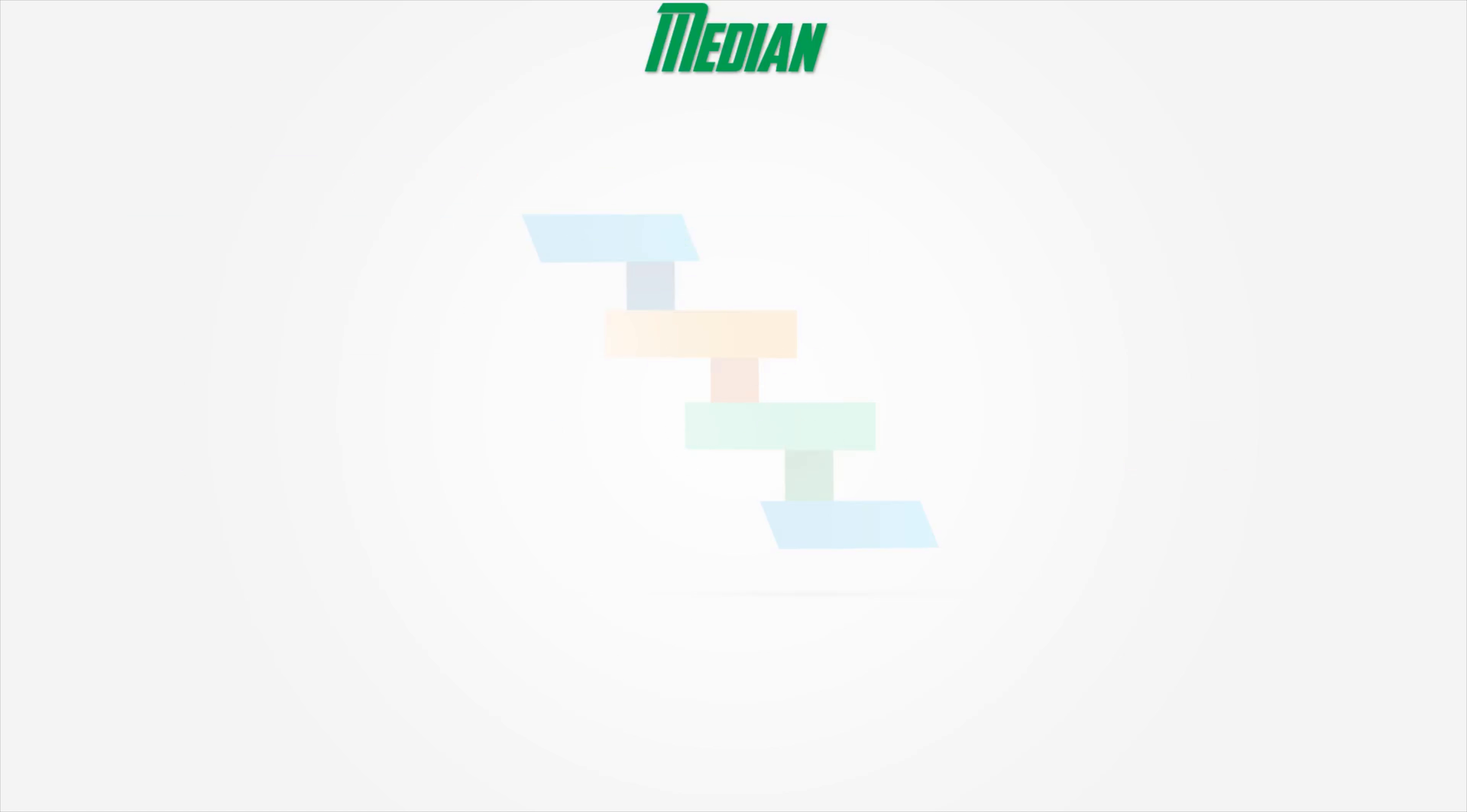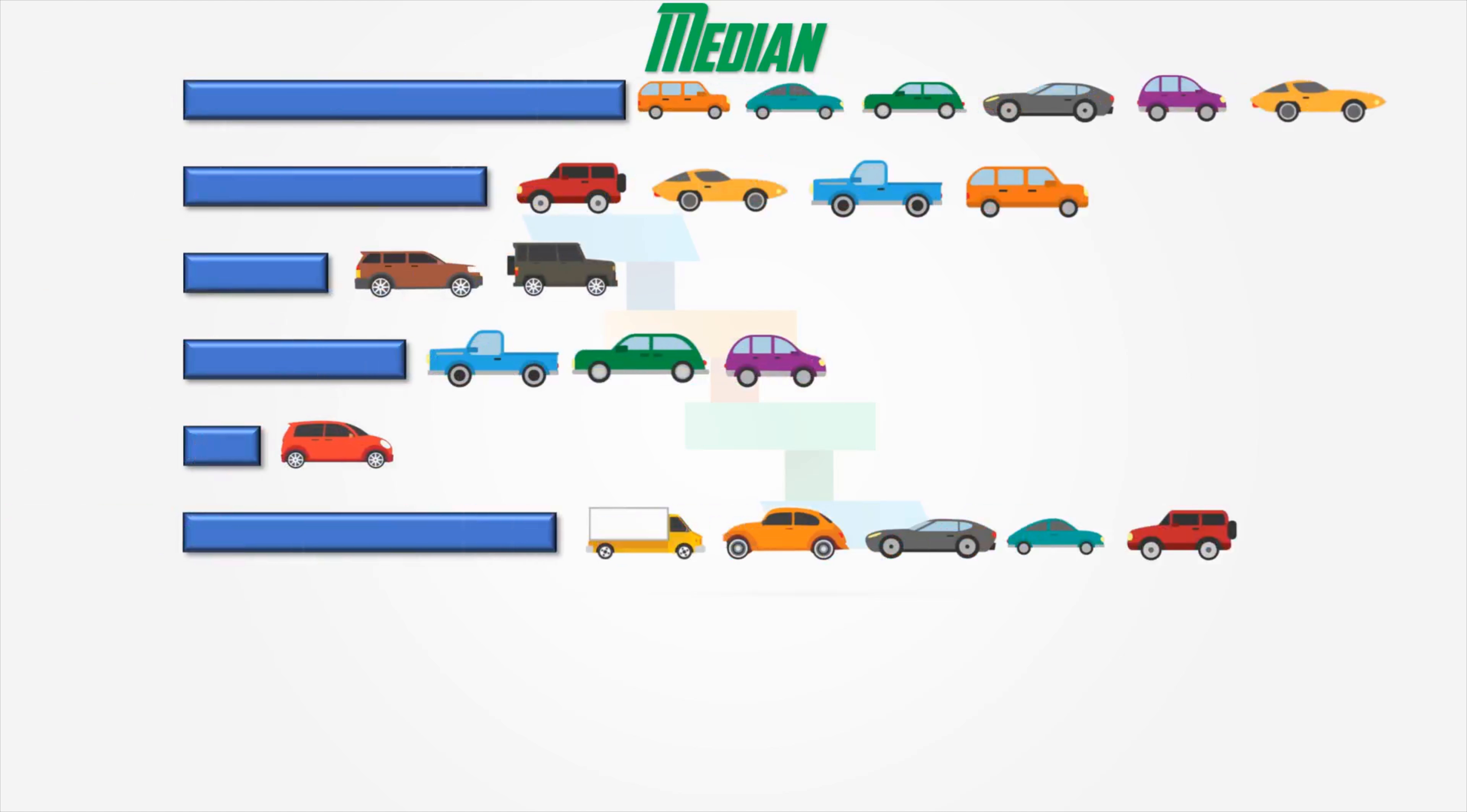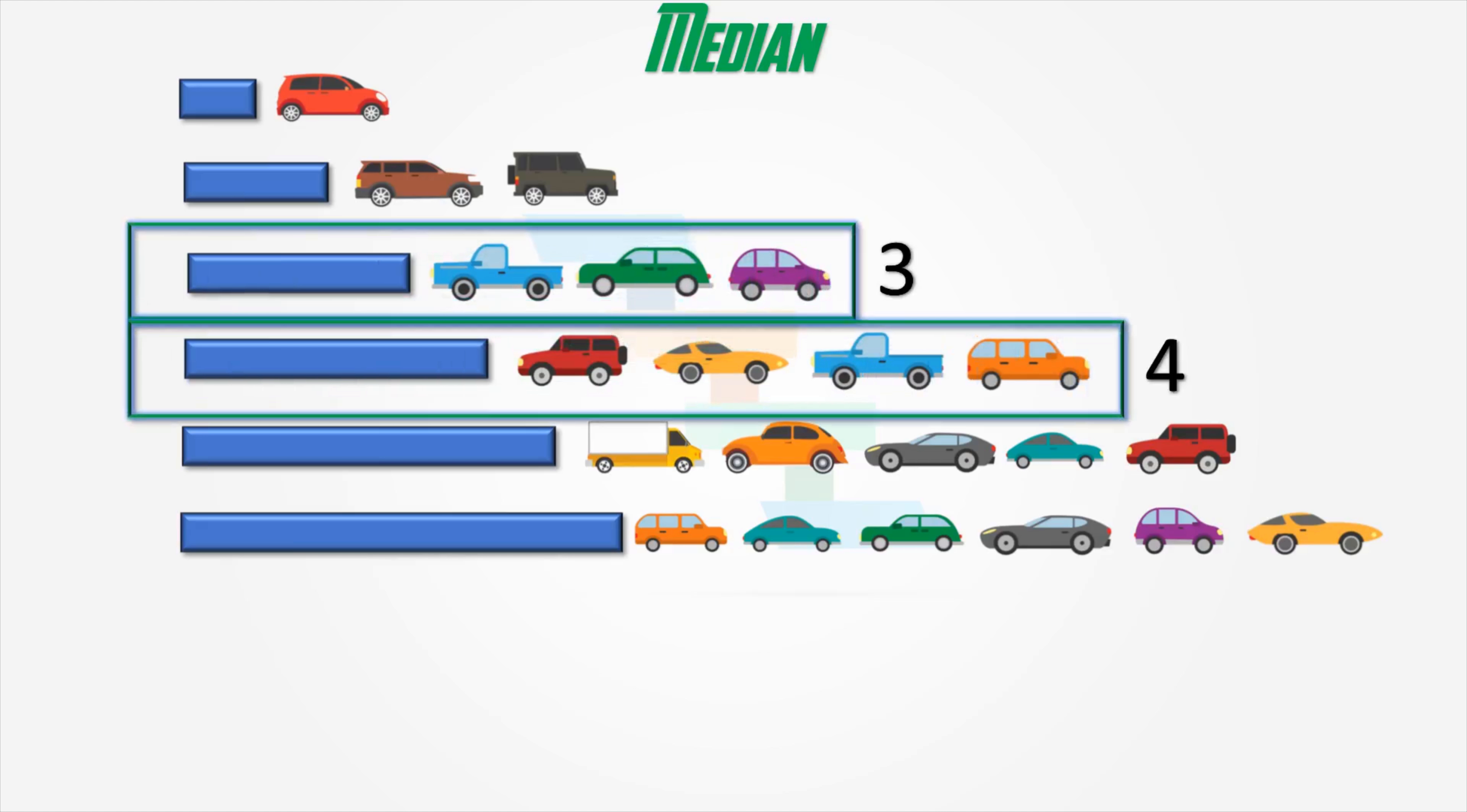Finding the median is very easy if the number of data points is odd. What if the number of data points is even? That means, what if the data set contains even number of data points? In that case, we need to take the center two data points and divide it by 2. That will give us a median. In this example, instead of car sales for 5 days, we will take for 6 days, which is even. Now, take the center two data points which is 3 and 4. Add it and divide it by 2 which gives us 3.5.